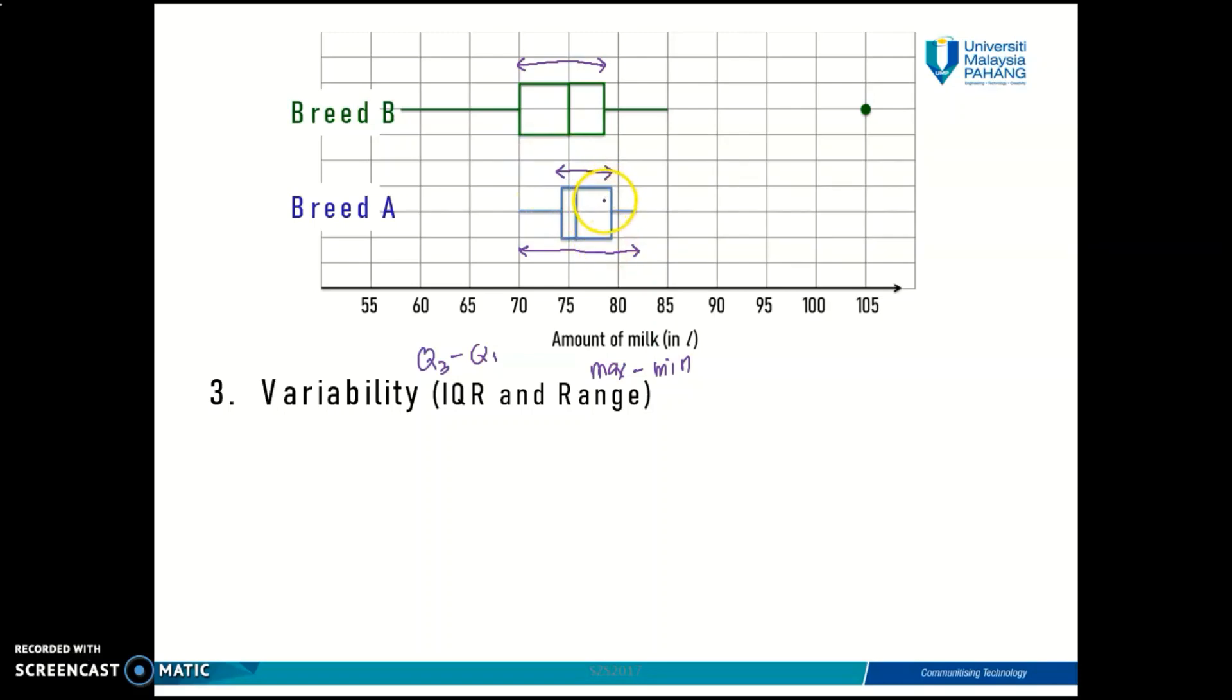By looking at the length of the IQR in breed B and breed A, by looking at the length of the box of breed B and the box of breed A, you can easily compare the differences in the variability between breed A and breed B. The longer the box is, it indicates that your data has a more spread distribution. The shorter the length is, it shows that your data has a smaller variability or a smaller IQR.